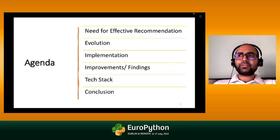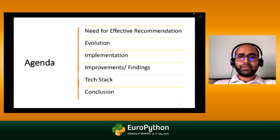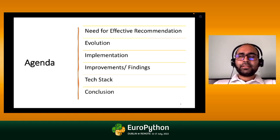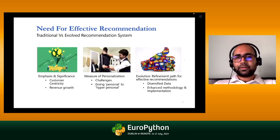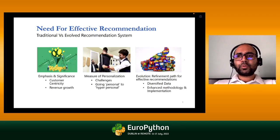I'll touch upon why there is a need for recommendation systems, how we are evolving from traditional to advanced approaches, how I implemented this particular system, what improvements and findings I had, and the tech stack I used. I'd like to start with the past first to set up the context — why are we going to this level of customization?